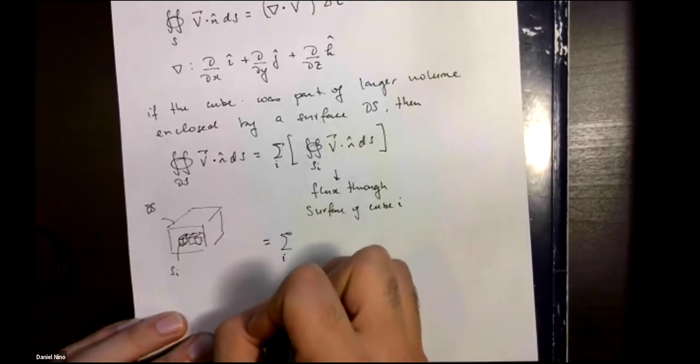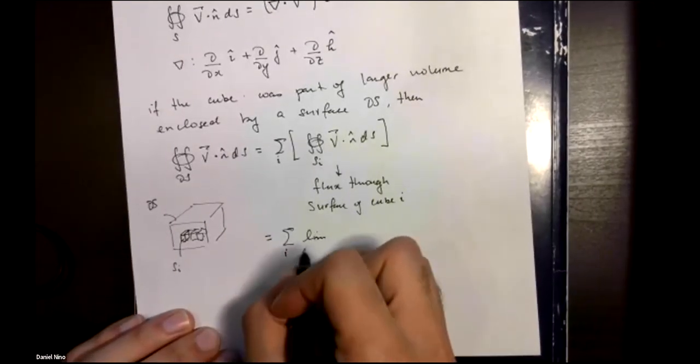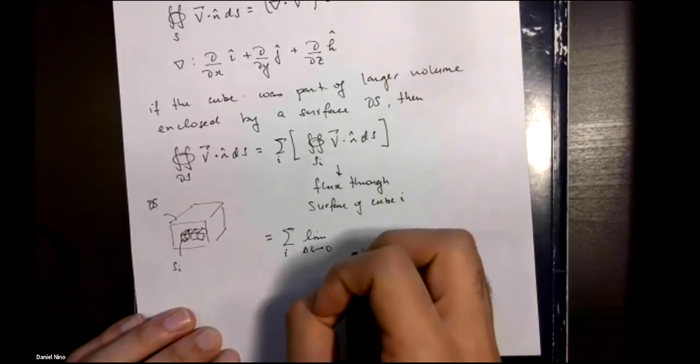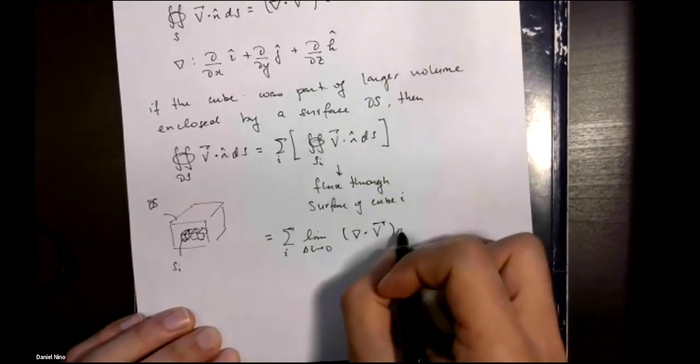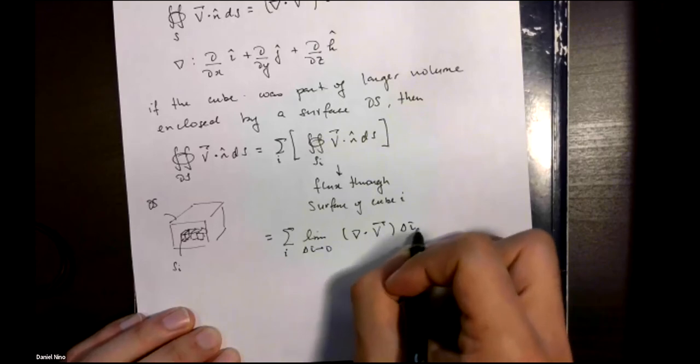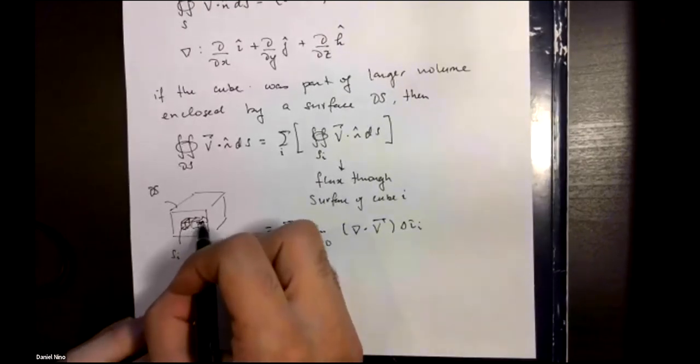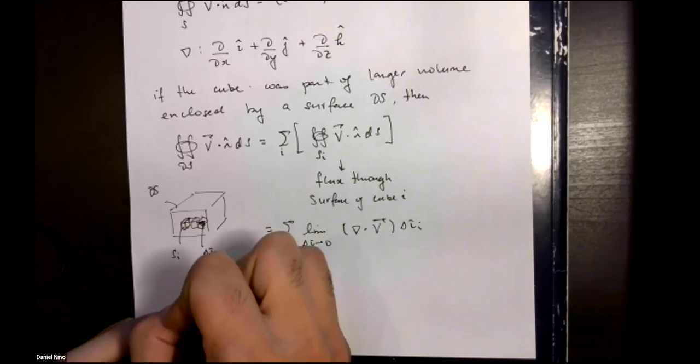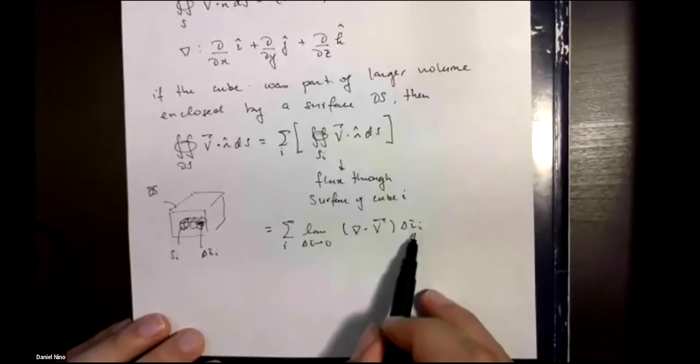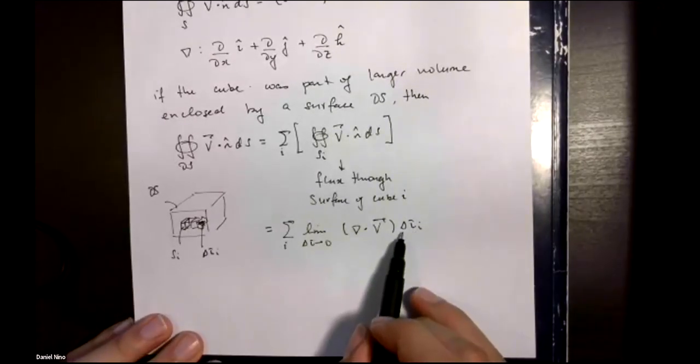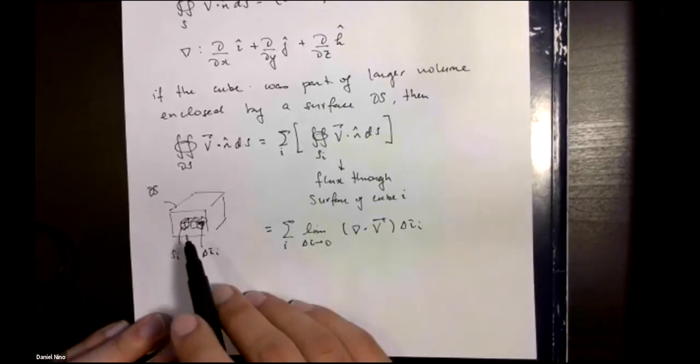We still have the sum over all of our surfaces. In the limit where delta tau goes to zero, we found that this was equal to the divergence of the vector field times our volume element of each cube. Each cube has a volume delta tau i, and in the limit where delta tau i goes to zero, that means this is the same thing as taking the limit where you have infinitely many small cubes breaking up your larger volume v.